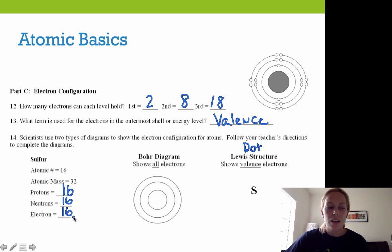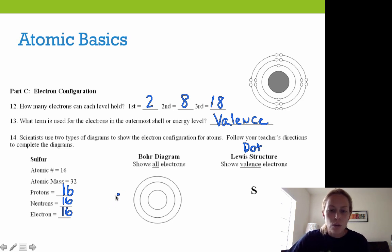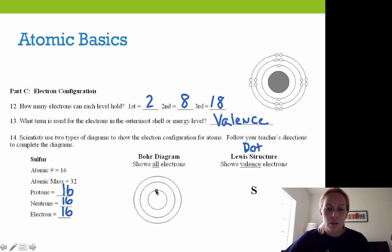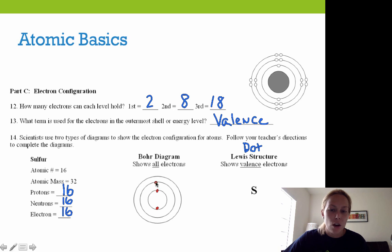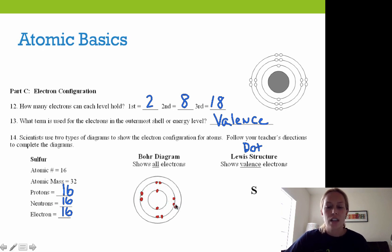Looking at the periodic table, sulfur has six valence electrons. We'll start with the Bohr diagram, which shows all electrons. Sulfur has 16 electrons, and the first energy level holds only two, so we put a dot there and a dot there — two electrons in the first energy level. The next energy level holds eight electrons: one, two, three, four, five, six, seven, eight. So we have eight electrons in the second energy level, giving us 10 total so far. The last energy level will have the remaining six electrons.